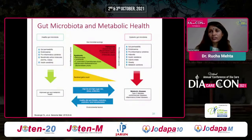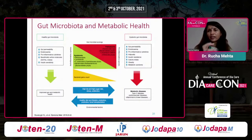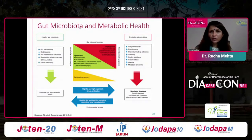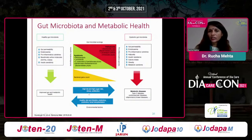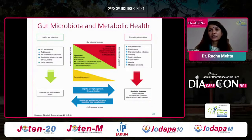Gut microbiota manipulation is important. Overeating or eating the wrong foods leads to intestinal permeability, allowing endotoxins into circulation, which triggers pro-inflammatory cytokines and the adiposity-insulin resistance pathway. High-fat, high-sugar diets, stress, and antibiotics worsen this dysbiosis. Conversely, a healthy diet, prebiotics, probiotics, and fecal transplantation can restore a healthy gut microbiome.